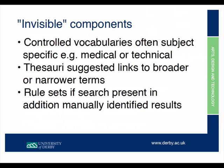Invisible components are things that are there even though you don't realize they're there — things like controlled vocabularies, often subject-specific. For example, if you type 'human resources' but a company calls their department 'people's department,' you need to make sure that searching 'personnel' or 'human resources' still brings up that department. Most people would never type 'people's department' into a search. So you make sure your vocabulary fits when people search, using something like a thesaurus that suggests links to broader or narrower terms.